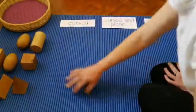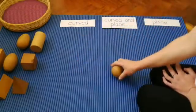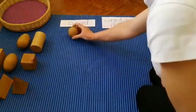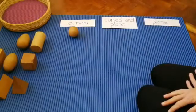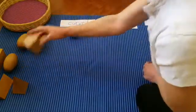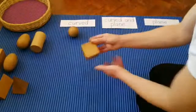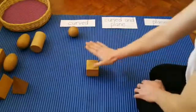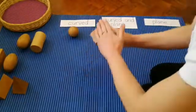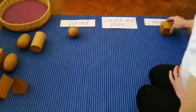A sphere can roll. It's a curved shape. The cube can't roll. It's a plain shape.